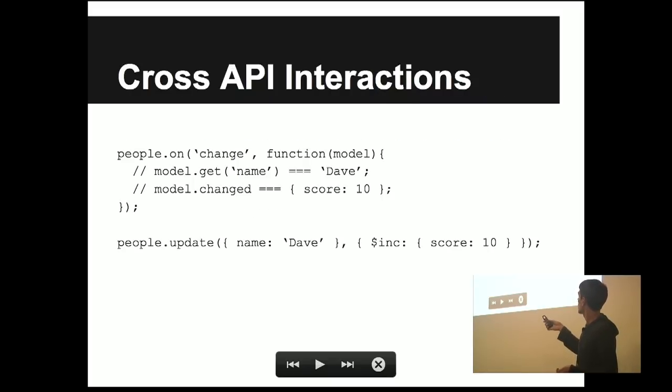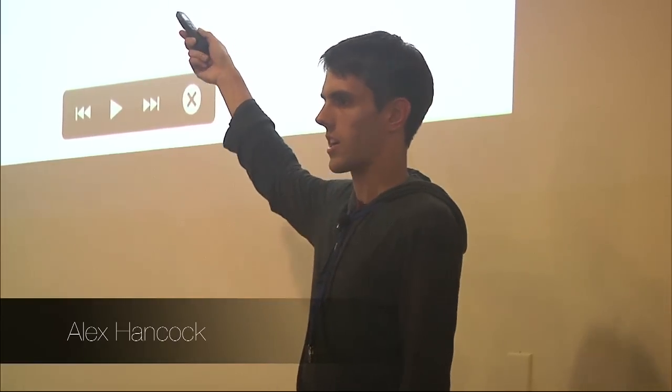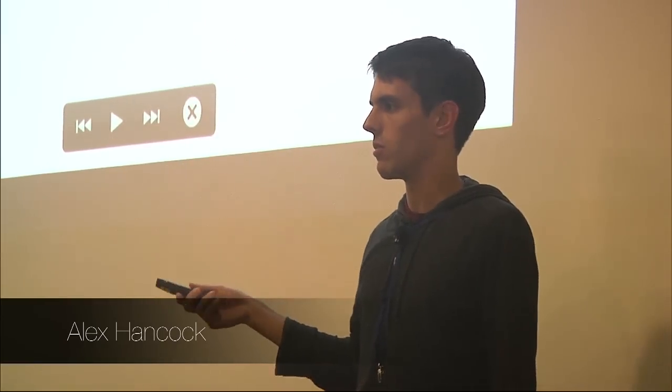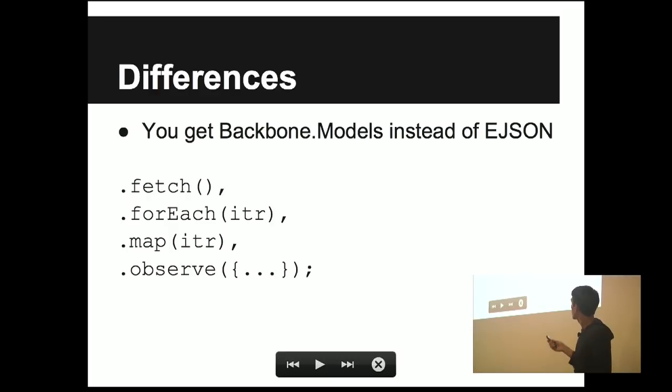Another thing that's kind of interesting is cross-API interaction. Say you have a Mongo update that finds everyone named Dave and bumps their score by 10. If you have the standard Backbone model change event listener on the collection, you'll get callbacks with the models, even though it didn't come from a normal Backbone update. And the other side of that is if you did random access to just grab a model and set its score to 10, and you had any observable queries on the mini-Mongo side, you would get callbacks with those models as well. Really the only difference between this and what you're used to with Meteor.Collection on the client side is that you get Backbone.Models instead of EJSON.